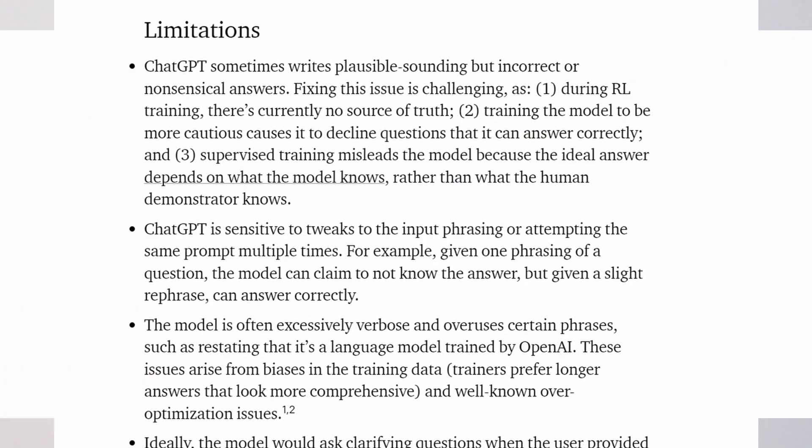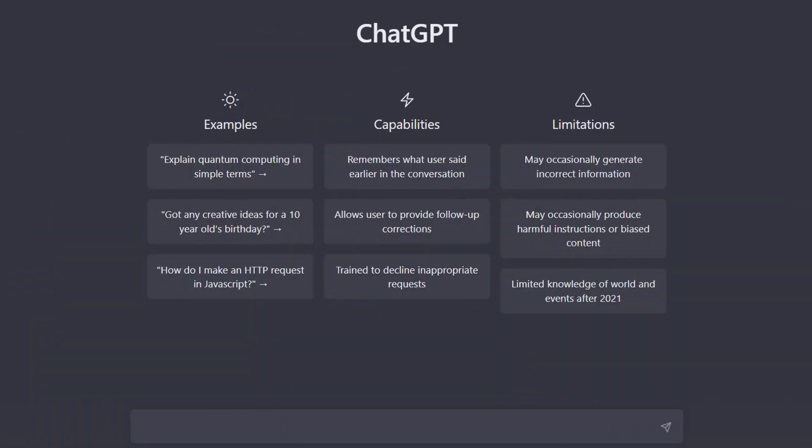As with all great technology, ChatGPT has its limitations which should be taken into consideration. As this is a language model trained on a large amount of textual data, it may lack the common sense that humans have. As a result, it may sometimes write plausible-sounding but incorrect responses — these limitations are mentioned in OpenAI's blog posts. Another thing to keep in mind is that ChatGPT has limited knowledge of the world after 2021, because its knowledge cutoff is 2021, meaning it does not know about current events that happened after that year.